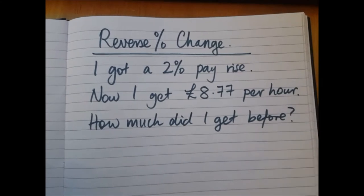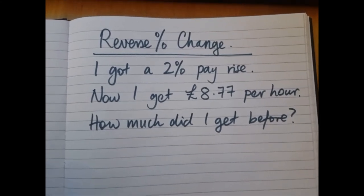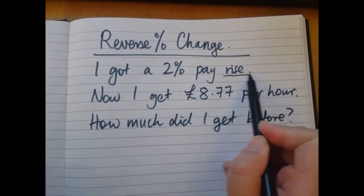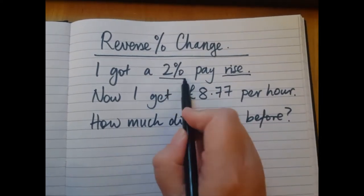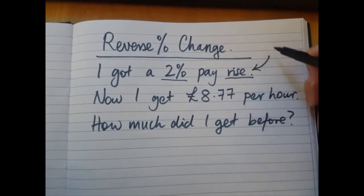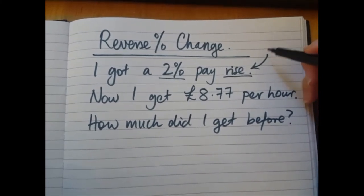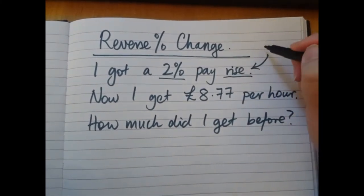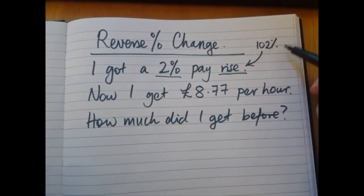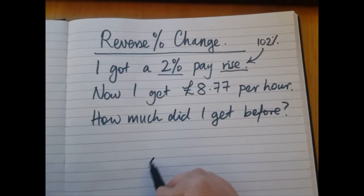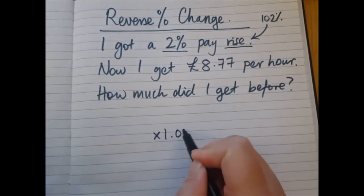This means now I get £8.77 per hour. We're going to work out how much did I get before. So first, a pay rise is a percentage increase. So the 2% increase, I start with 100 and I add on 2% to give me 102%. That's the multiplier of 1.02.